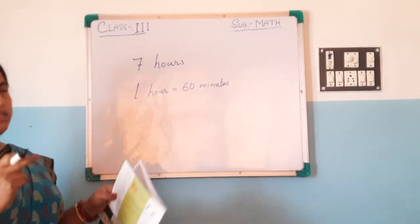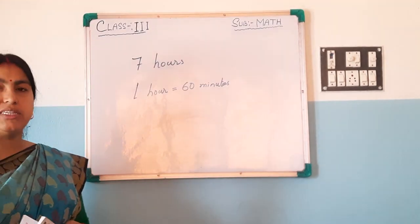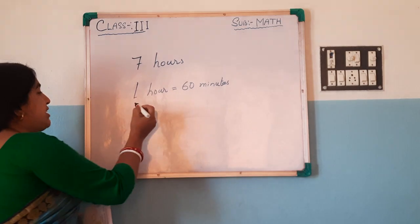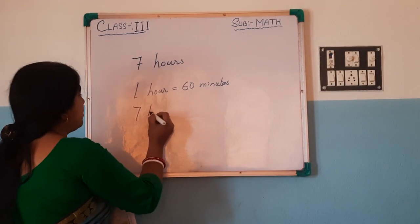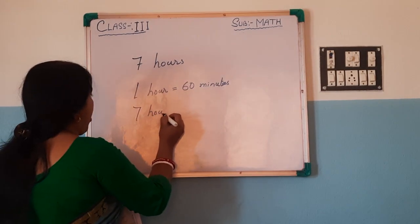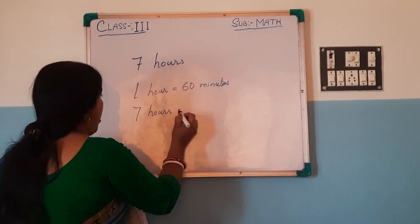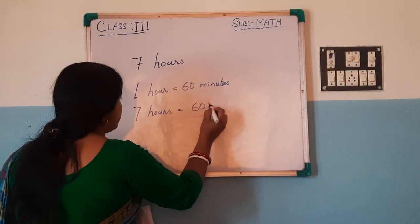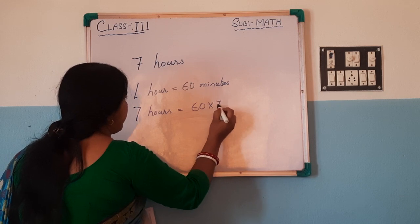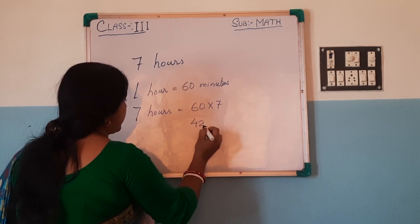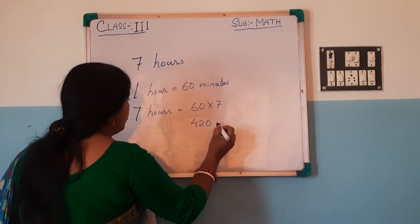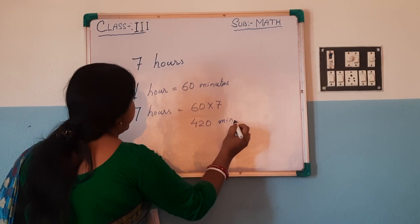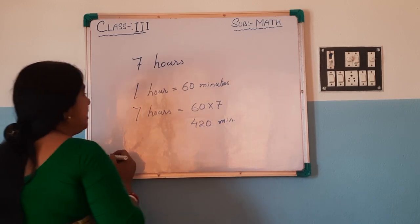1 hour is equal to 60 minutes, so 7 hours will be 60 multiplied by 7. 6 sevens are 42, so that is 420 minutes.